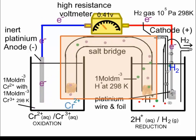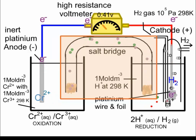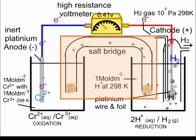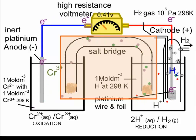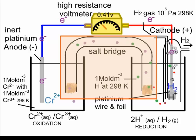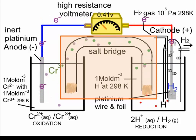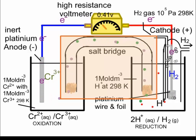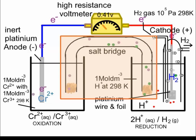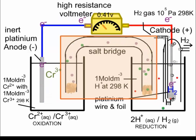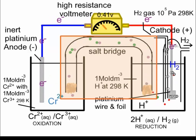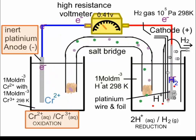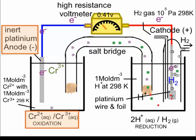It is important that the ions present in the salt bridge are neither discharged at the electrodes nor react with any of the ions present in the solutions in the half cells. This is what makes sodium and potassium salts particularly suited, as they have very low reduction potentials and pose no competition with hydrogen ions. It also makes chloride and nitrate ions suitable because they form soluble salts, so there is no risk of precipitation reactions.